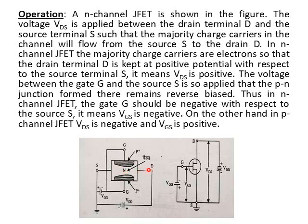In N-channel FET, the majority charge carriers are electrons, so the drain terminal D is kept at positive potential with respect to the source terminal S — it means VDS is positive. The voltage VGS between the gate G and the source S is applied such that the PN junction formed there remains reverse-biased — meaning the gate is negative and the channel is positive, so VGS is negative.